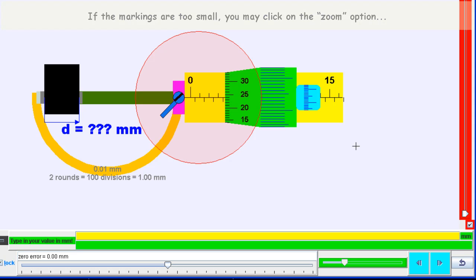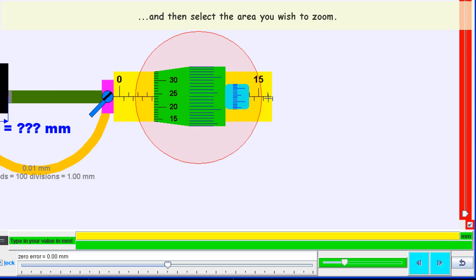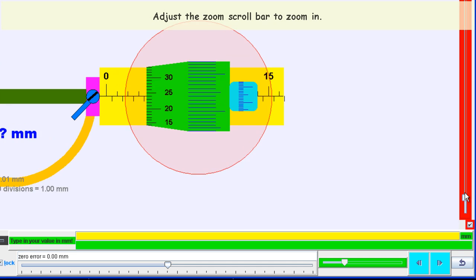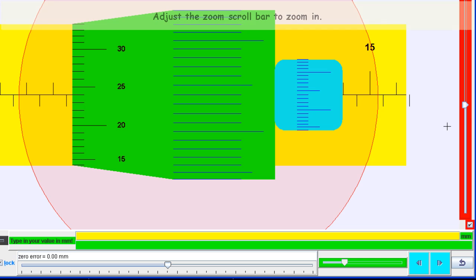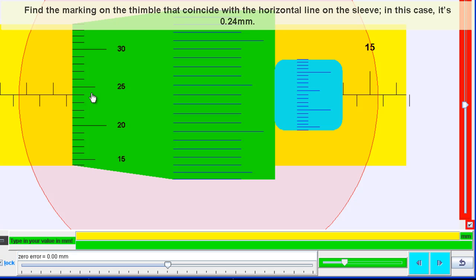If the markings are too small, you can use this zoom function which is created in the computer model. The answer is actually 3.50 mm on the main scale.